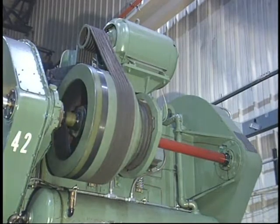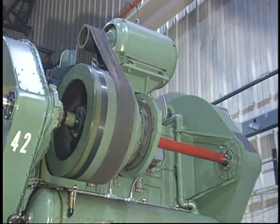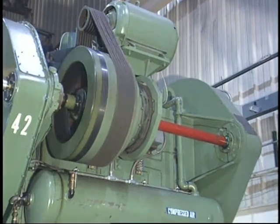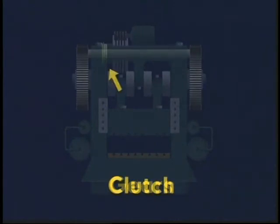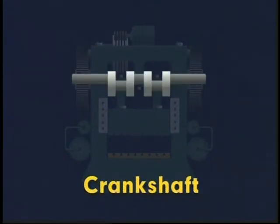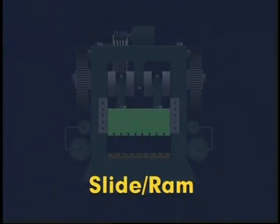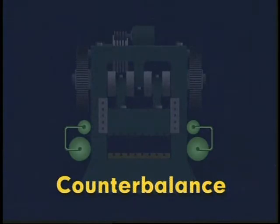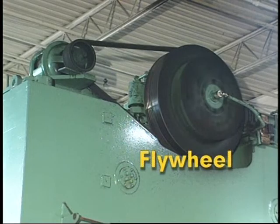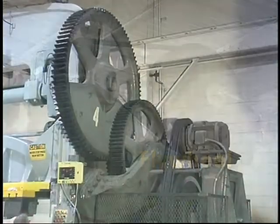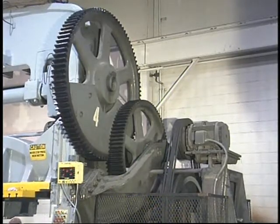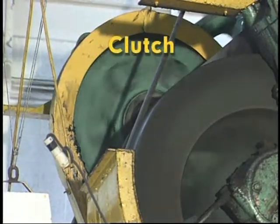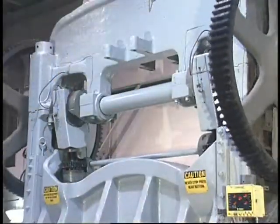In a mechanical press, an electric motor supplies the energy needed to stamp parts. Moving parts that store, control, and transmit that energy to the die and workpiece include the flywheel, gears, clutch, crankshaft, pitman, connection, slide or ram, counterbalance, and brake. The flywheel stores the energy supplied by the motor. The gears reduce the speed and increase the torque delivered by the flywheel through the clutch — this is known as gear reduction.